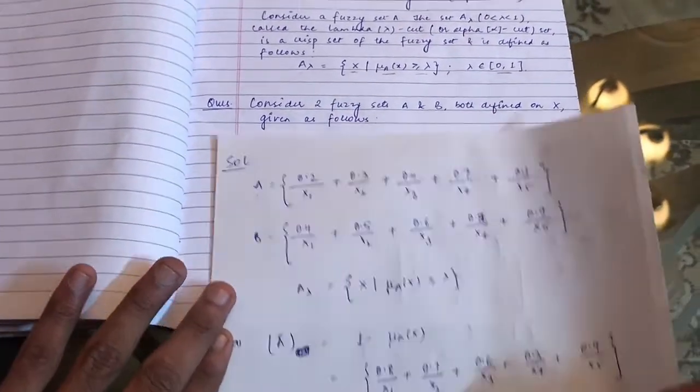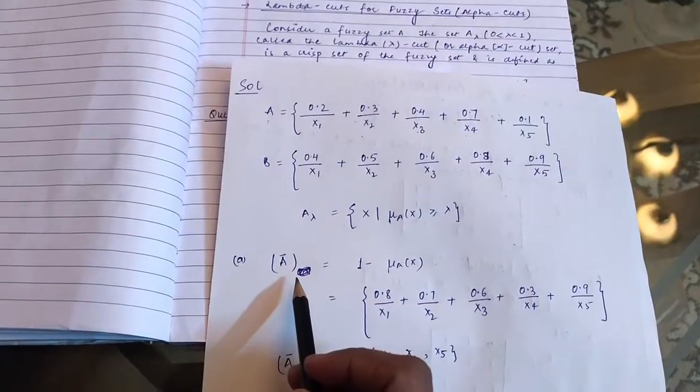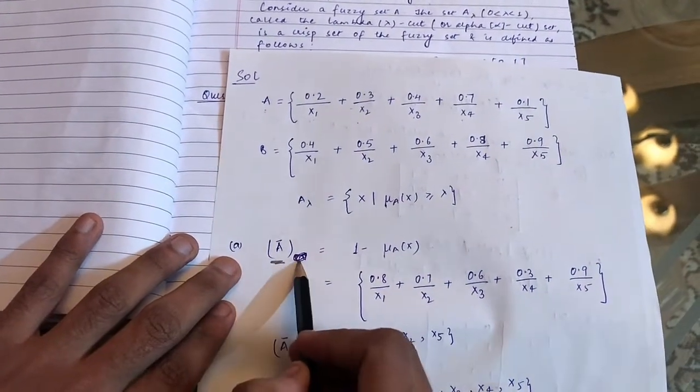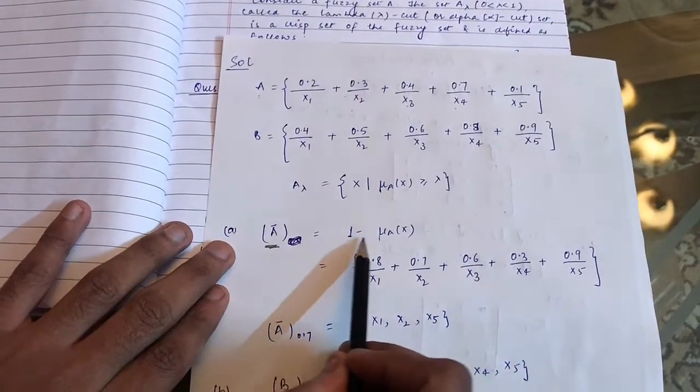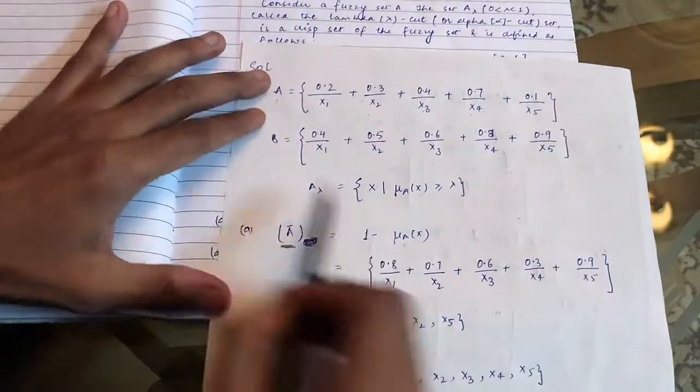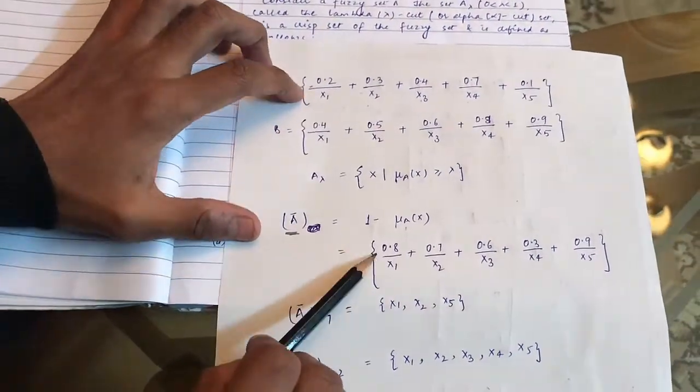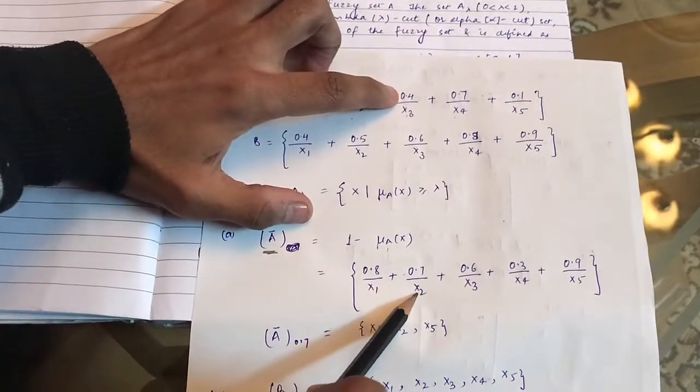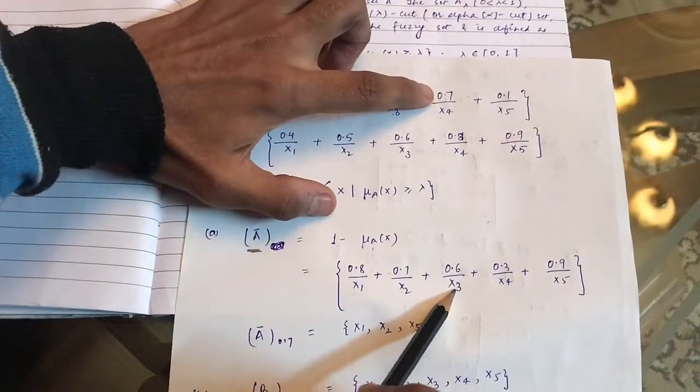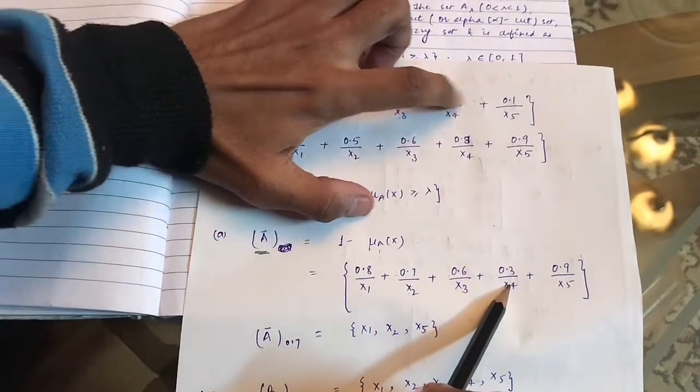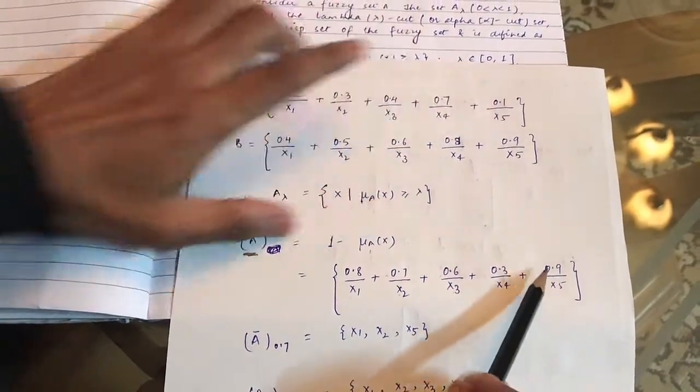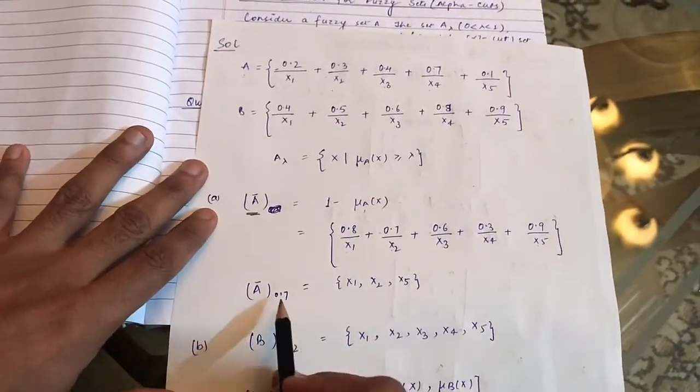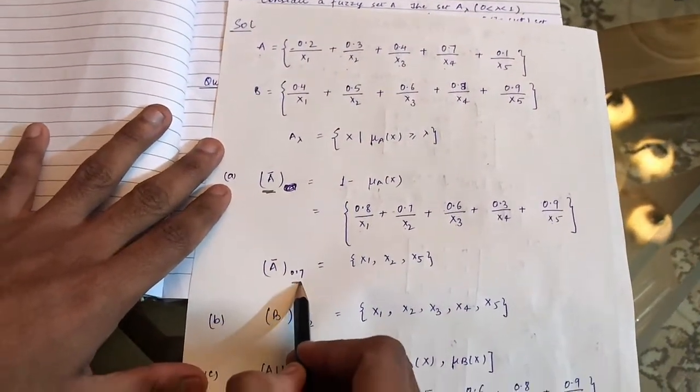First is to find A bar 0.7. Before finding out the lambda cut for A bar, we have to calculate A bar. A bar equals 1 minus membership functions of A. So 1 minus 0.2 is 0.8/x1, 1 minus 0.3 is 0.7/x2, 1 minus 0.4 is 0.6/x3, 1 minus 0.7 is 0.3/x4, 1 minus 0.1 is 0.9/x5.